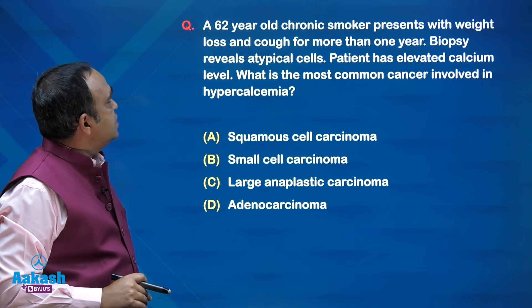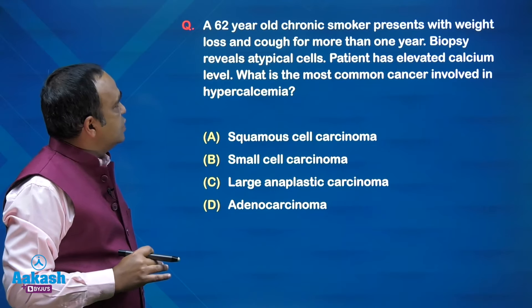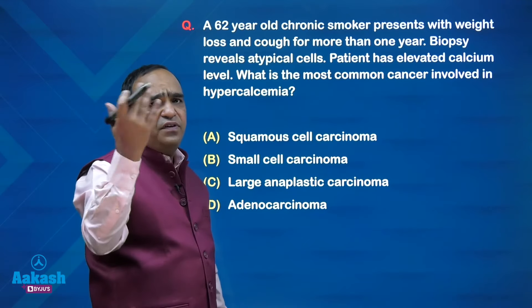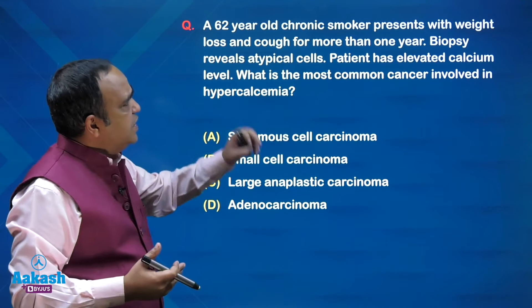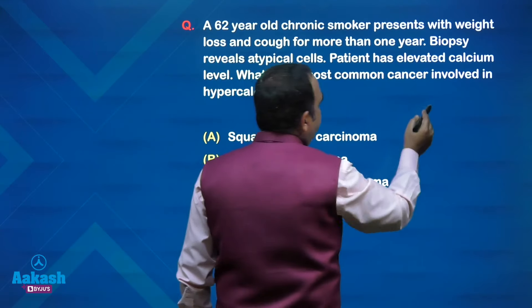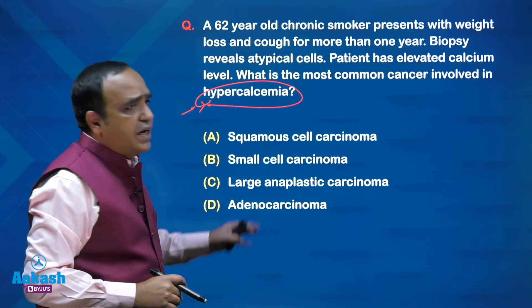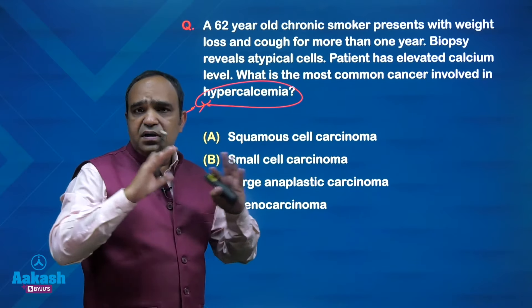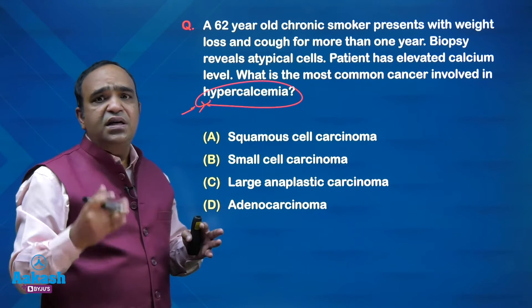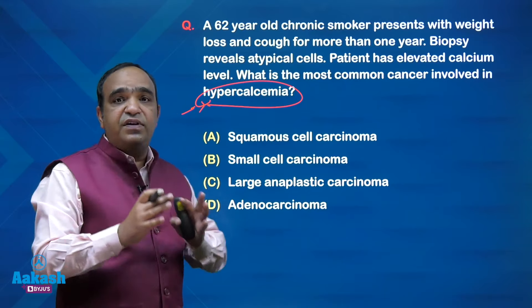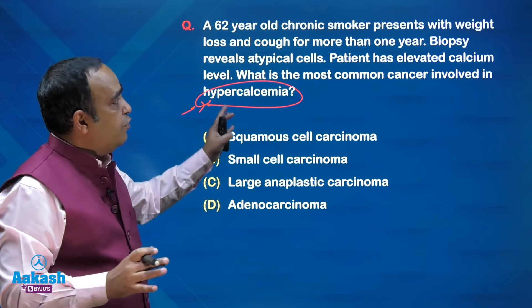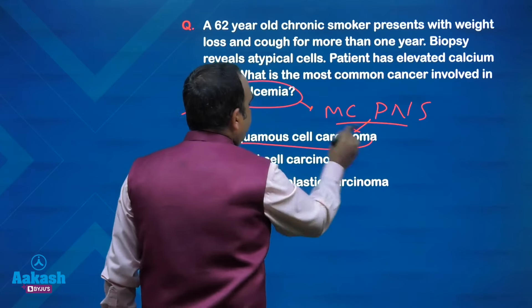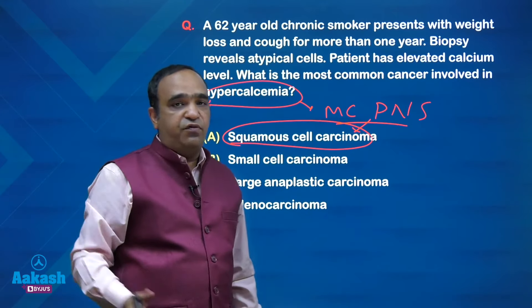Next: a 62-year-old chronic smoker with weight loss and cough for more than one year. Biopsy reveals atypical cells, favoring malignancy — some lung cancer. The patient has an elevated calcium level. What is the most common lung cancer associated with hypercalcemia? All of you know the paraneoplastic syndromes associated with various lung cancers. Hypercalcemia is the most common paraneoplastic syndrome associated with squamous cell carcinoma — again a straightforward question.